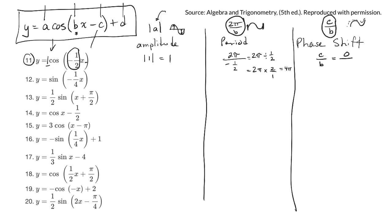So that would be C would be 0. And B is negative 1/2. But anything divided by negative 1/2 is going to be 0. So my phase shift for that graph is 0.